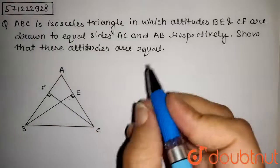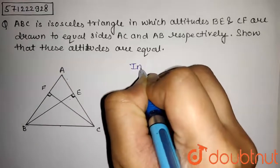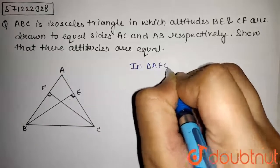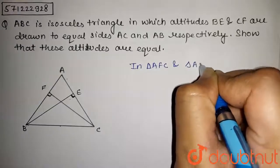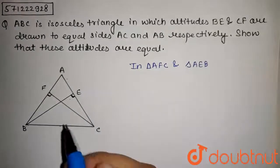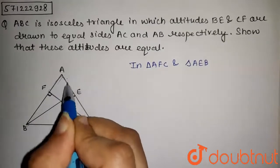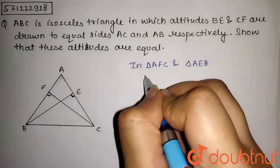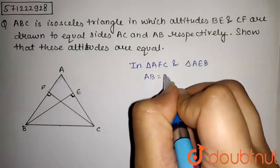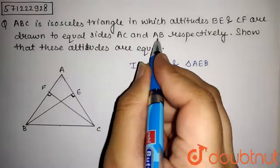Now see in triangle AFC and triangle AEB, that is this triangle and this triangle. So in these two triangles we have given that AB is equal to AC, that is equal sides AC and AB.